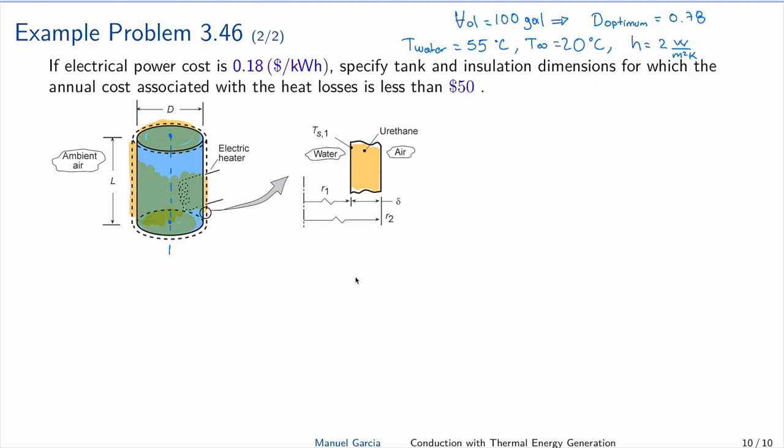The first thing we need to determine is what this money in terms of energy means. The problem gave us information about the cost per kilowatt hour. Remember, kilowatt hour is a unit of energy, so the cost is dollars per kilowatt hour.